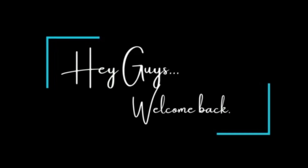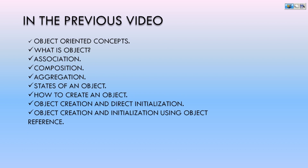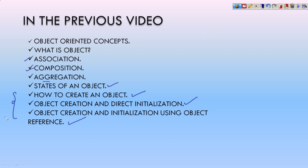Hey guys, welcome back to the channel. In our previous video we had seen object oriented concepts: what is an object, association, composition, aggregation, states of an object, how to create an object, object creation and direct initialization, and object creation initialization using object reference. We have seen all the theoretical concepts in the previous video.